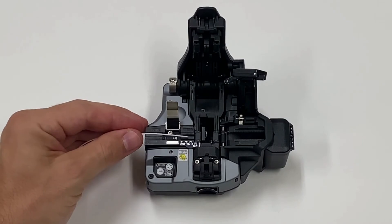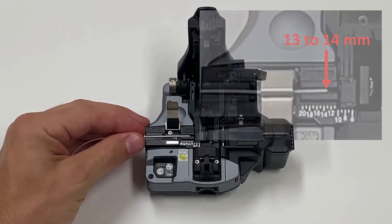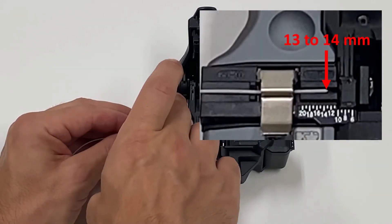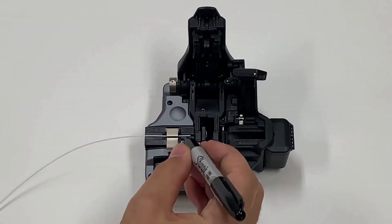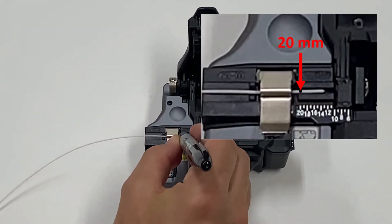Place the fiber into the CT50 cleaver at the 13 to 14 millimeter length. Close the clamp. Make a mark at the 20 millimeter length.